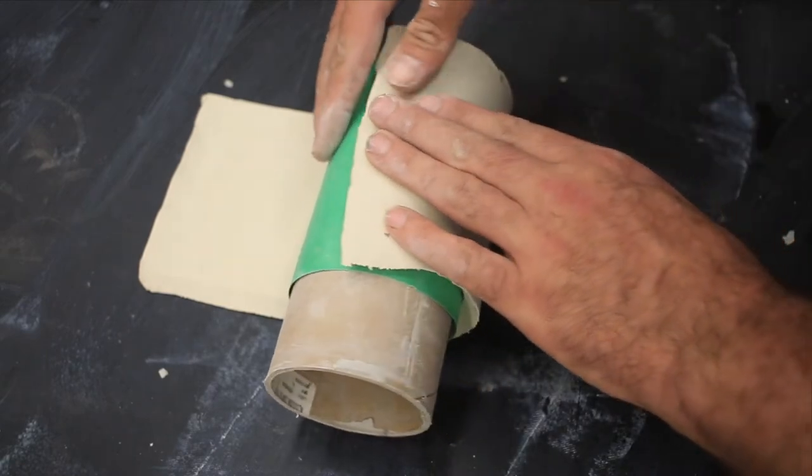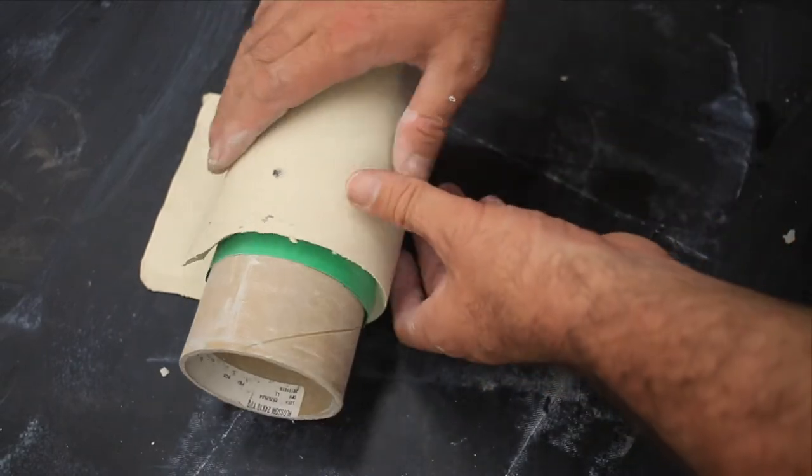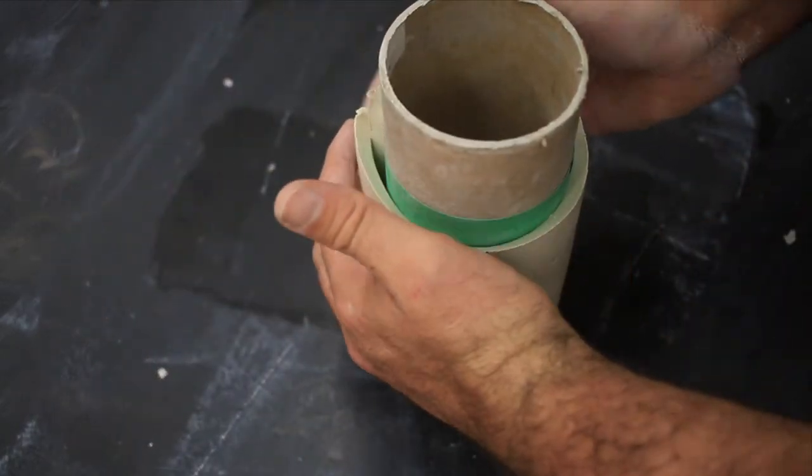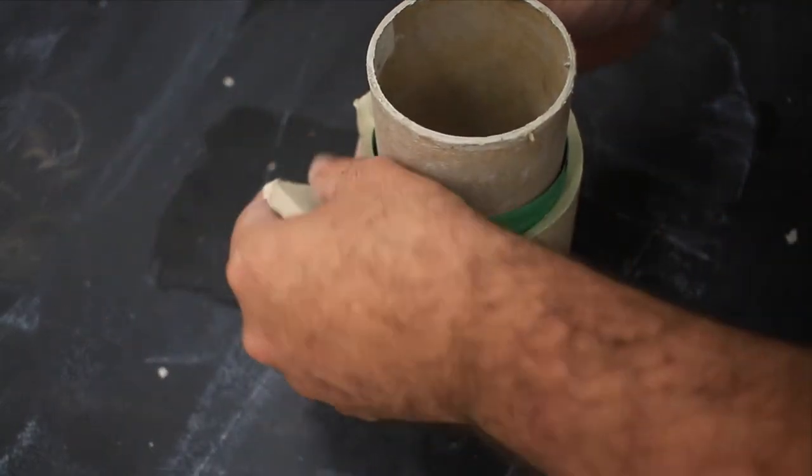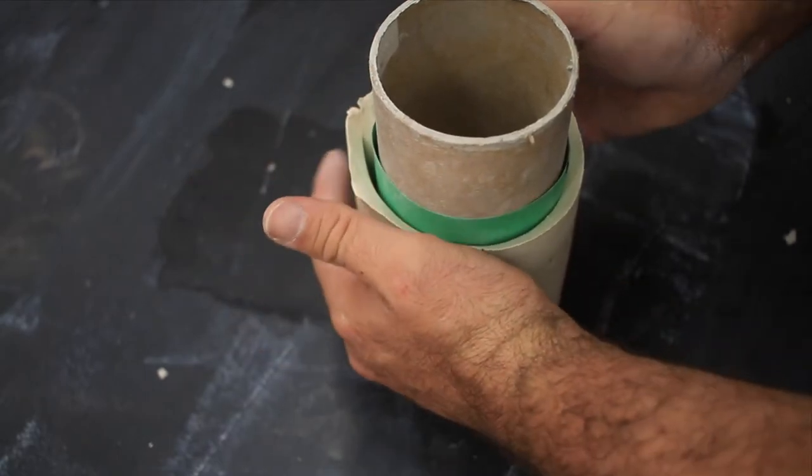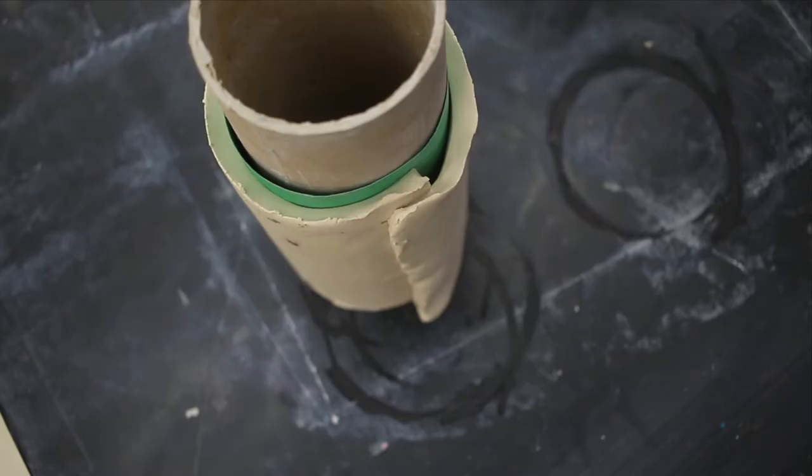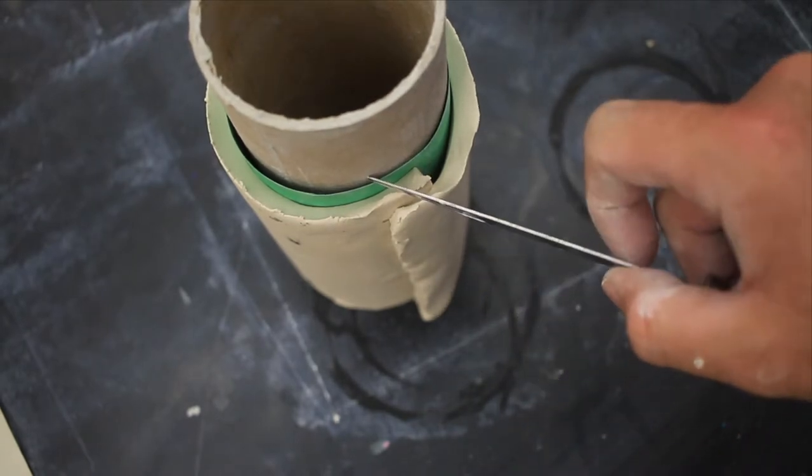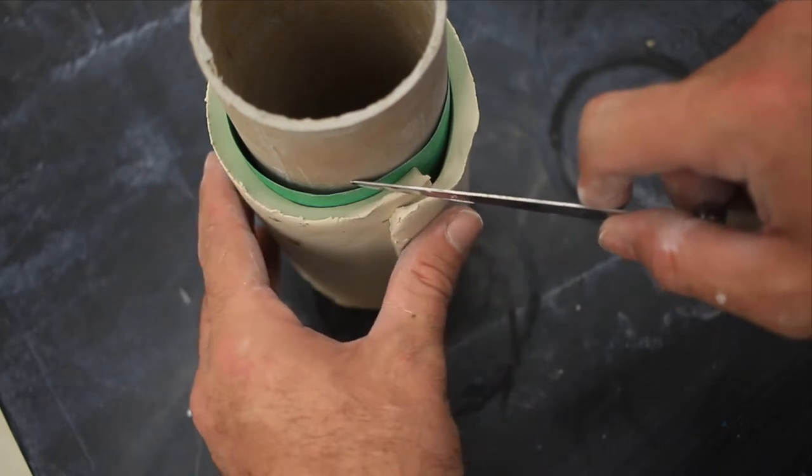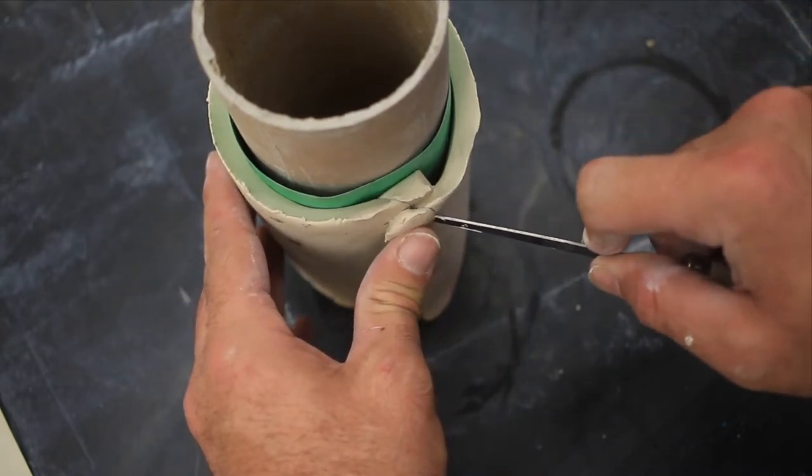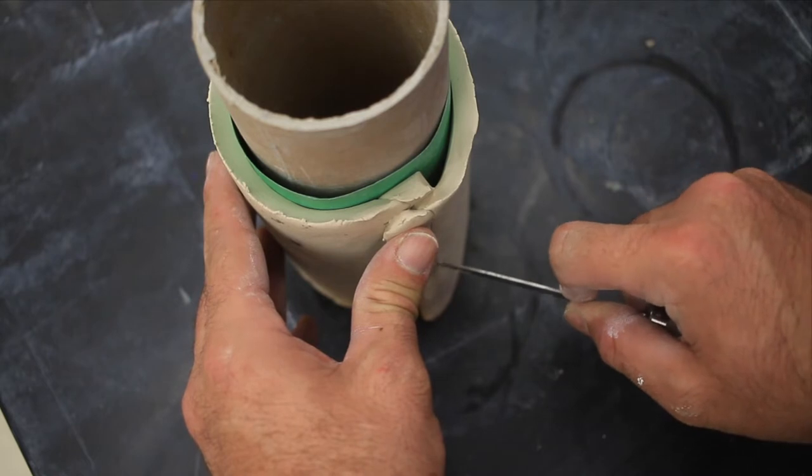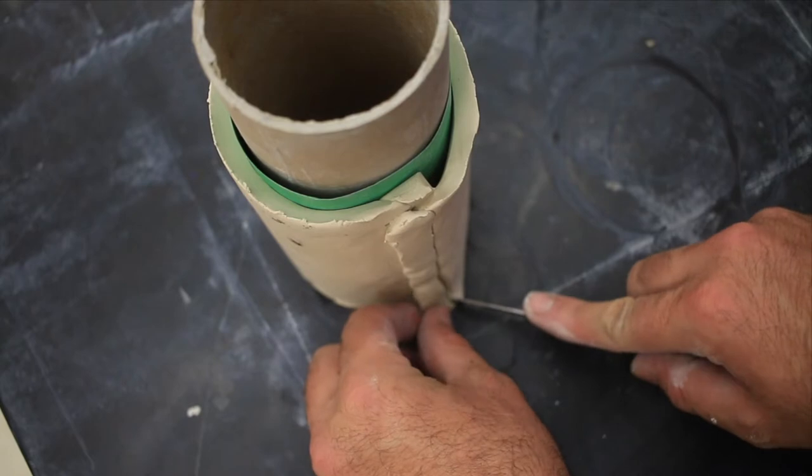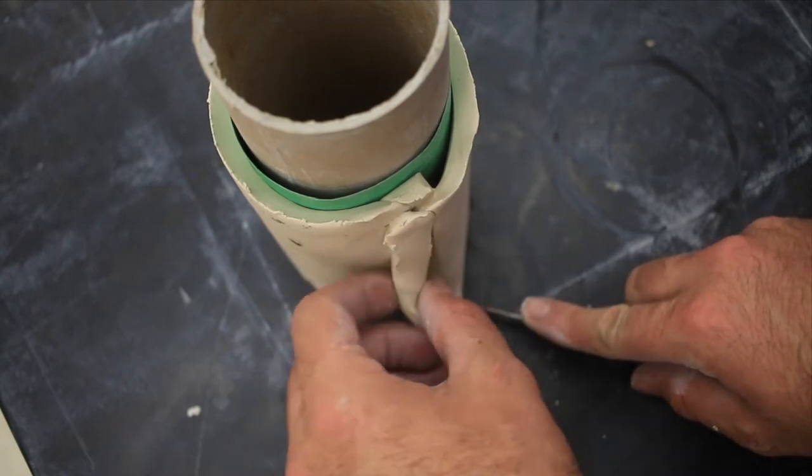Now that you have your slab rolled around the tube and overlapping, use a fettling knife to cut a miter joint. Hold the fettling knife at a 45-degree angle and cut straight down. This will make a much stronger joint than a butt joint because it has more surface area.